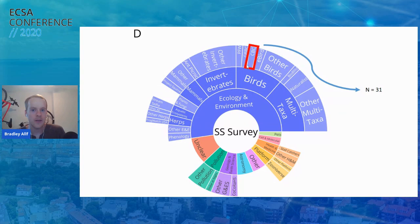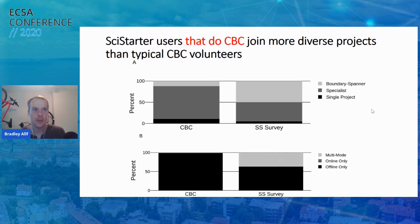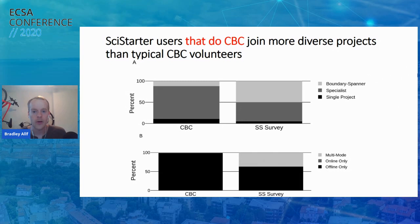The last thing we did was take out the volunteers from the SciStarter survey who had also participated in the Christmas Bird Count — 31 people — and looked at the diversity of their projects, comparing them to those sampled directly from the Christmas Bird Count standalone survey. Again, we see a striking difference: Christmas Bird Count volunteers who engaged through SciStarter were more likely to be boundary spanners and to participate in both online and offline projects.